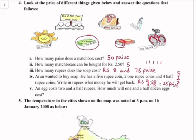He will get back 25 paise. Next, how much will 1 and a half dozen eggs cost? One and a half dozen means 18 eggs. Each egg costs Rs 2.50, so we multiply 18 by 2.50 and get Rs 45.